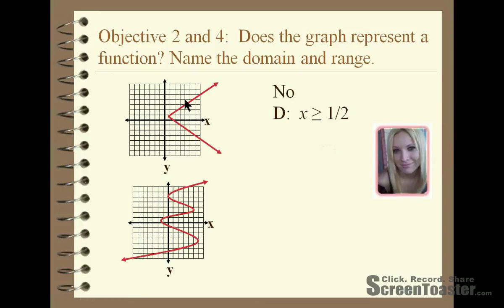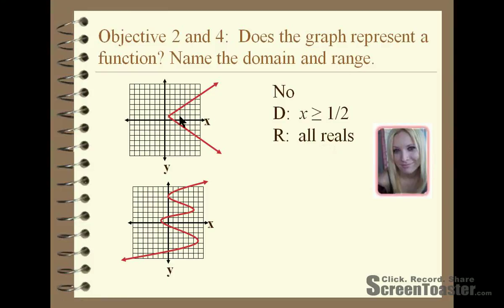For the domain, as you can see, the graph starts at x equals one half right here and doesn't go to the left. Therefore, x has to be greater than or equal to one half for the domain. For the range, it's all real numbers, because the graph goes up and down with no restrictions on the y values it could take on.